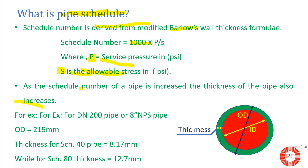As the schedule number of a pipe increases, its thickness increases. For example, for an 8-inch pipe, schedule 40 thickness is 8.17 mm while schedule 80 thickness is 12.7 mm. A separate video covers how to calculate pipe thickness and schedule number in detail. This video focuses on the importance and meaning of schedule number.